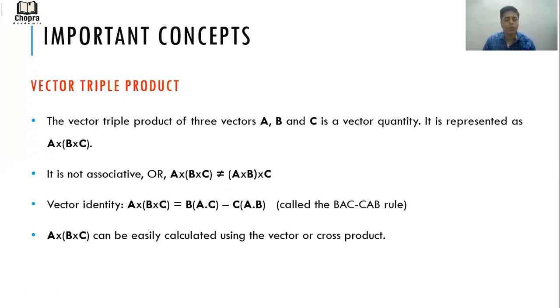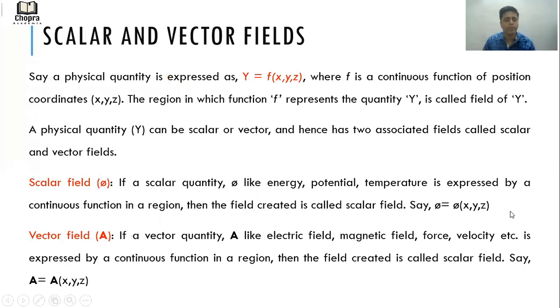What are scalar and vector fields? Say a physical quantity Y is expressed as f(x,y,z), where f is a continuous function of position coordinates x, y, z. The region in which the function f represents the quantity Y is called field of Y. A physical quantity Y can be scalar or vector and hence has associated fields called scalar and vector fields.